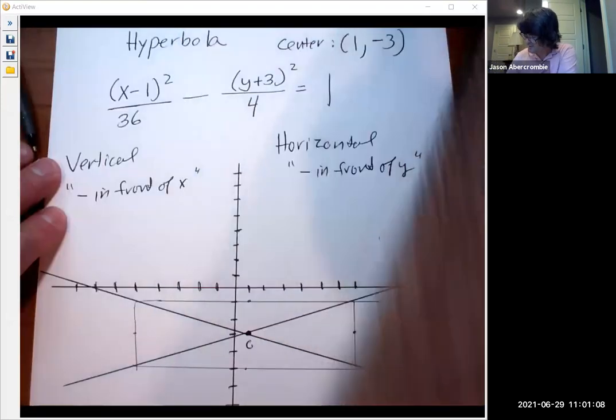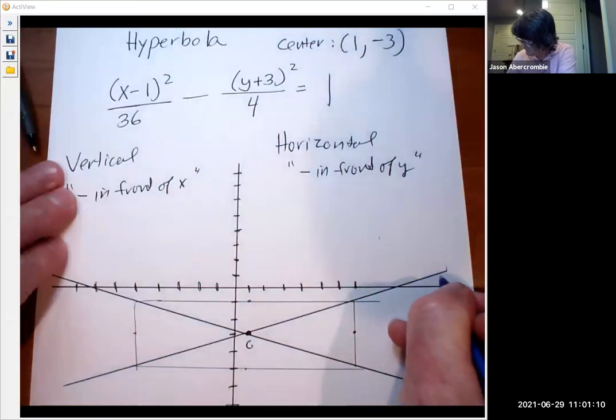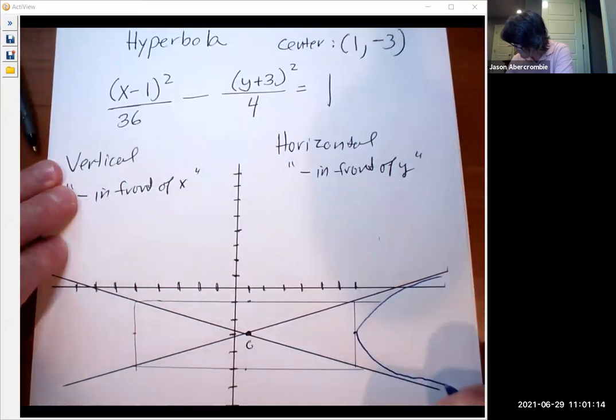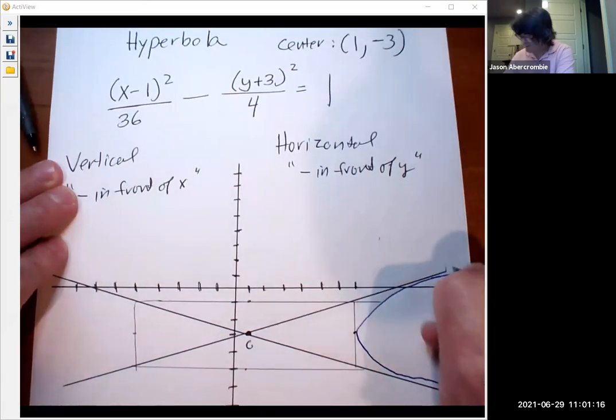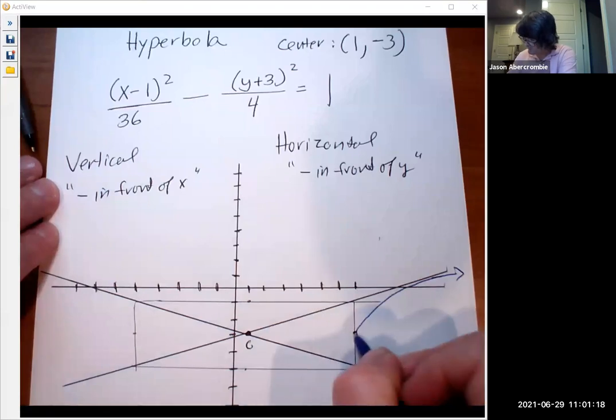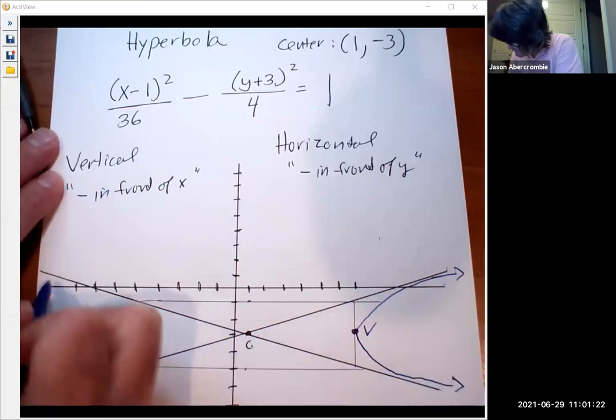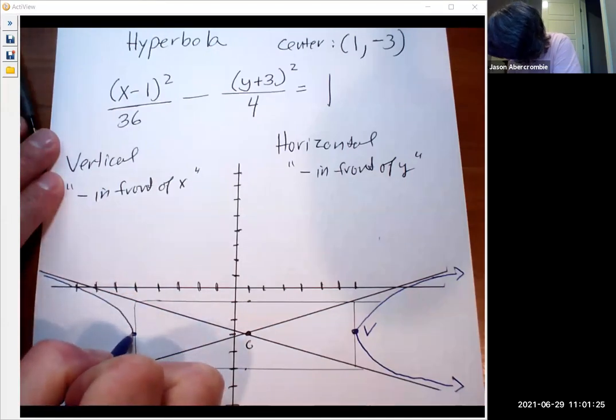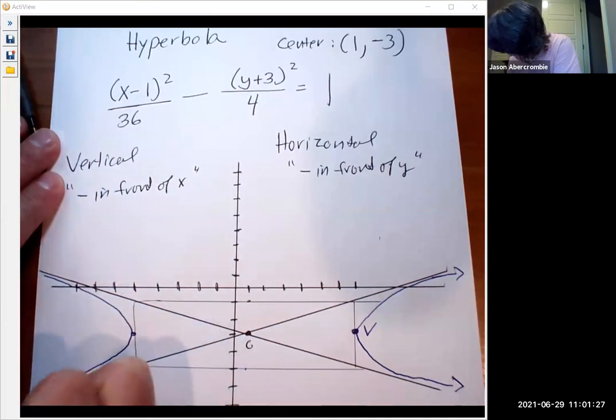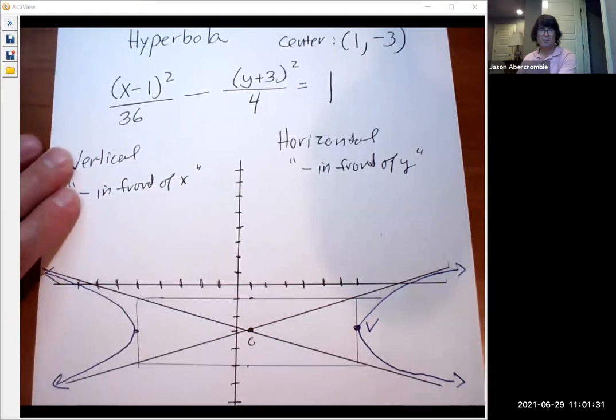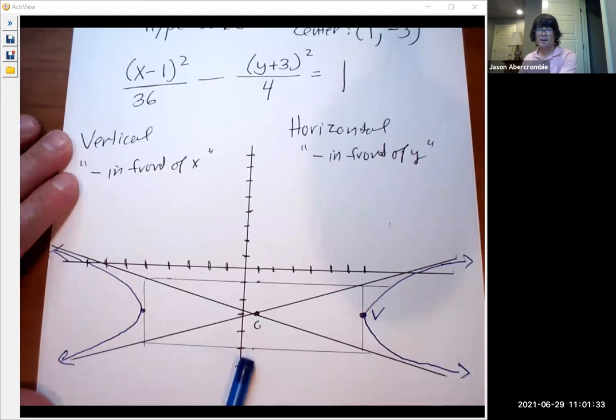And now I'm just going to draw my branches in. This is the actual graph now. I'm drawing in a different color. Draw it like that. Here's the vertex. And then there's one over here. Kind of snuggle it in to those asymptotes. So that is my hyperbola graph. The box is not part of the graph. The asymptotes even aren't part of the graph, but it does help you get the actual graph.